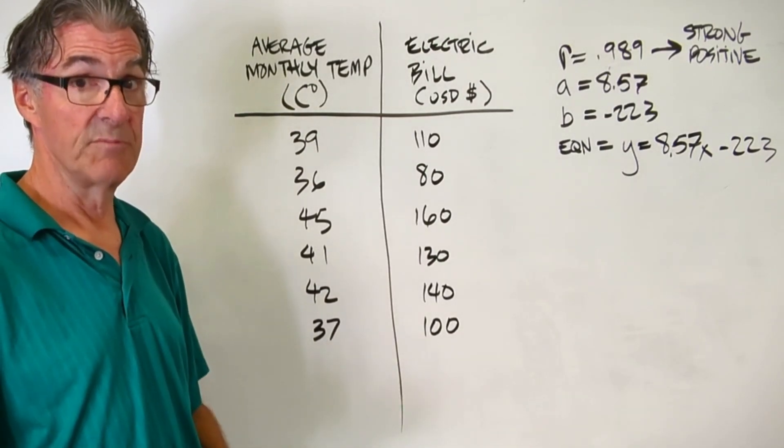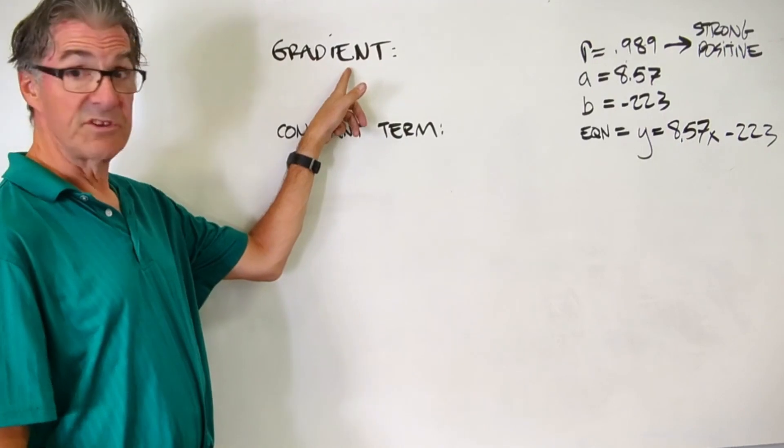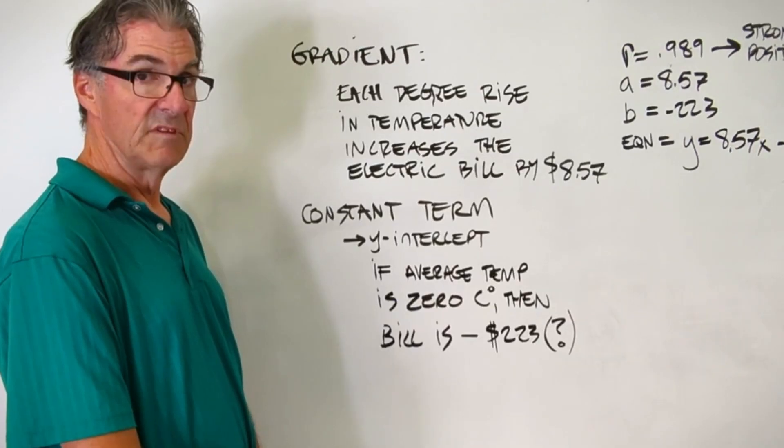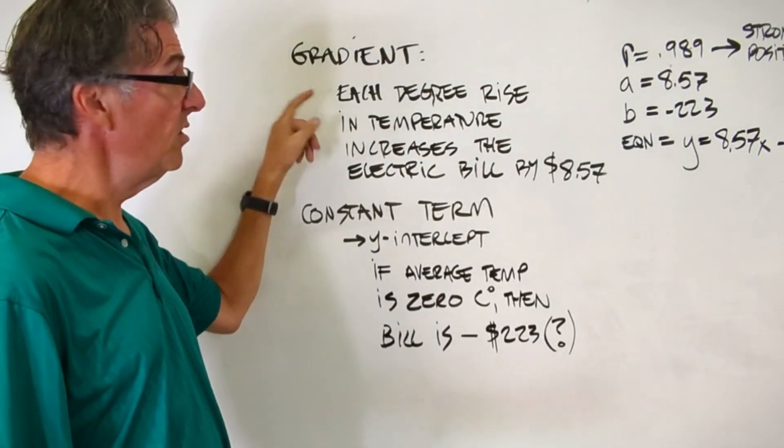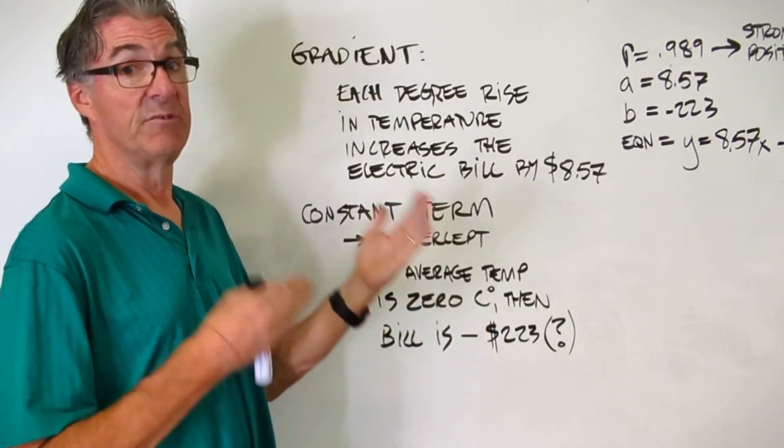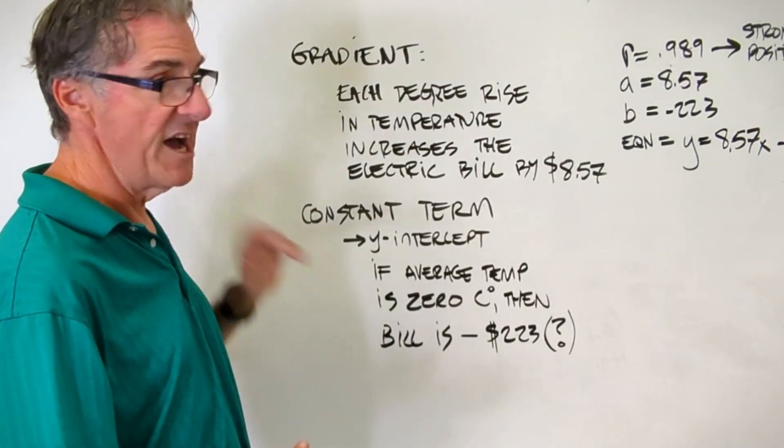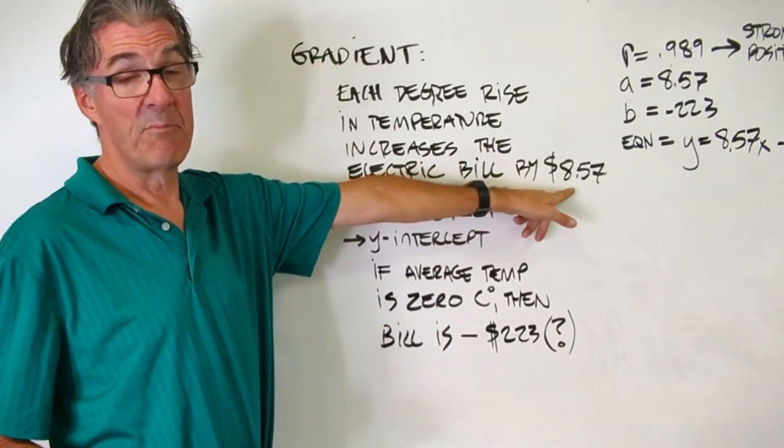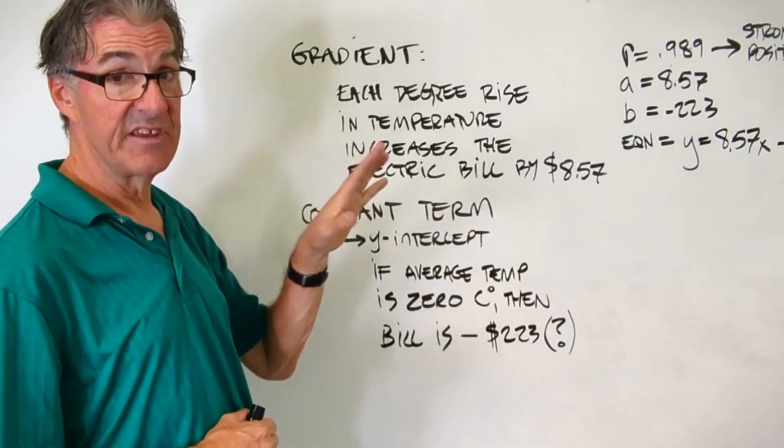Okay, so now let's do some interpretations. So pause the video and interpret the gradient in terms of our problem and interpret the constant term. Let's look at the gradient. So it's pretty straightforward. Just like in our last example, a gradient spells out how much change in y you get in response to change in x. So in this case, each temperature degree rise, every time it goes up by 1 degree Celsius, the electric bill is going to go up by $8.57. So that's what the gradient means in this example.